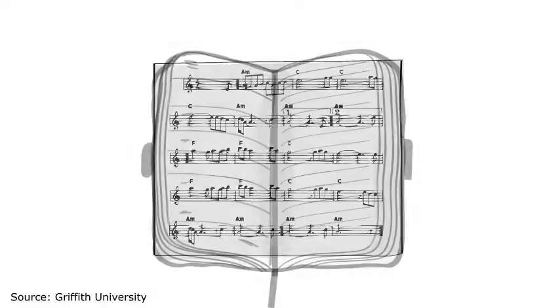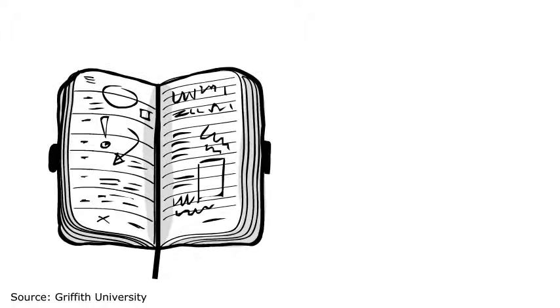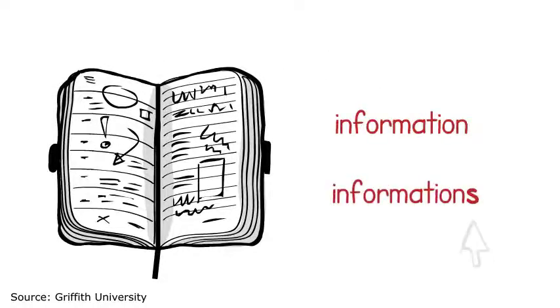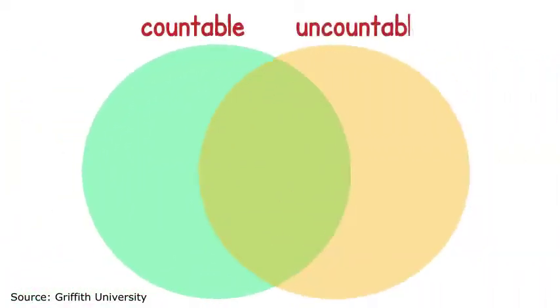Uncountable nouns do not have a plural form. For example, we say information but not informations. Uncountable nouns thus take the singular form of the verb. Different quantifiers are used with countable and uncountable nouns.